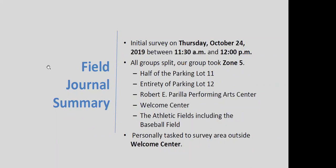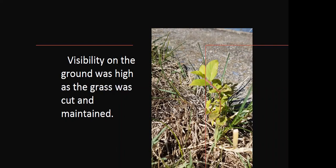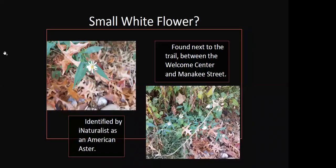The visibility on the ground was high, thankfully, because the grass was cut and maintained, which made finding the plants and weeds very easy to see. There were several plants growing between the cracks in pavement, as well as many growing next to the Welcome Center building itself. But one that really caught my attention was a small white flower that I found on the trail between the Welcome Center and Manakee Street, which leads outside of the campus. I took a picture of it and sent it to iNaturalist, and somebody at KPU likely identified it through iNaturalist as an American aster. The specific species was not made clearly available, but I still decided to focus my project on this lone flower that I managed to find.